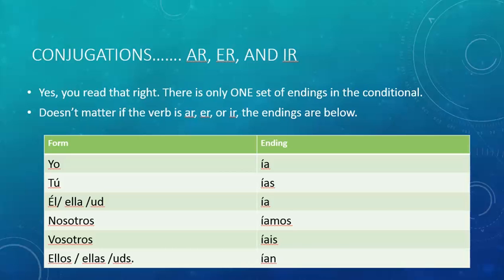If the form is YO, the ending is ÍA. Please do note that there is an accent mark on all of the I's that begin the ending. All of the I's.